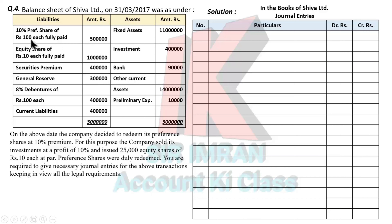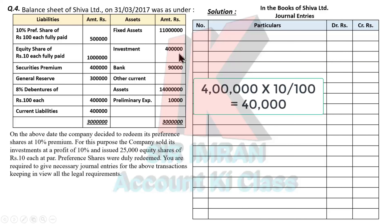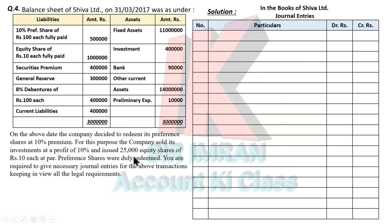For this purpose, the company sold investments at a profit of 10%. Investment cost was ₹4 lakh, so 10% profit is ₹40,000, meaning bank receives ₹4,40,000. The company also issued 25,000 equity shares at par — no premium — so one fewer entry is needed compared to a premium issue.